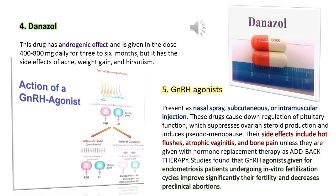Number 5: GnRH agonists, available as nasal spray, subcutaneous, or intramuscular injection. These drugs cause downregulation of pituitary function, which suppresses ovarian steroid production and induces pseudomenopause. Side effects include hot flushes, atrophic vaginitis, and bone pain, unless given with hormone replacement therapy as add-back therapy. Studies found that GnRH agonists given for endometriosis patients undergoing IVF cycles significantly improve fertility and decrease preclinical abortions.